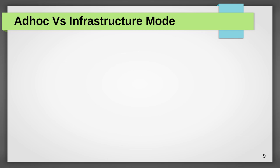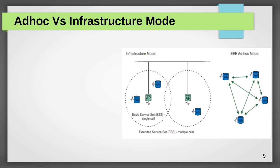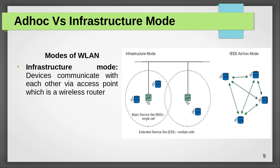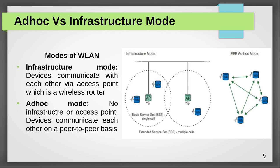Now let us see the difference between the ad hoc and infrastructure modes of 802.11 — it operates in two modes. In infrastructure mode, the network is based on some infrastructure with an access point or base station where all devices are connected, and the access points are connected to a backbone network. In ad hoc mode, there is no such base station or infrastructure, and devices communicate with each other on a peer-to-peer basis.